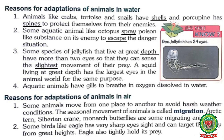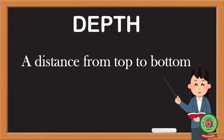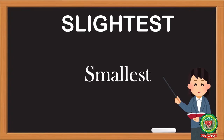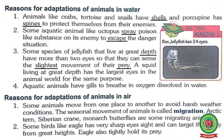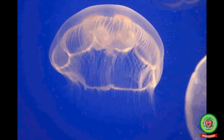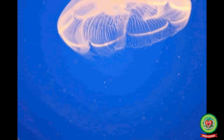Number three: some species of jellyfish that live at great depth have more than two eyes so that they can sense the slightest movement of their prey. Underline 'depth': a distance from the top to bottom. Underline 'slightest': smallest. Underline 'prey': the animal that is hunted and killed by another for food.